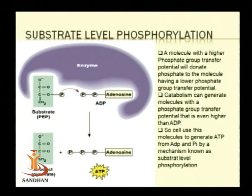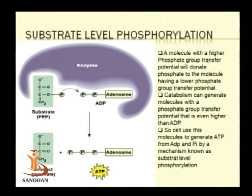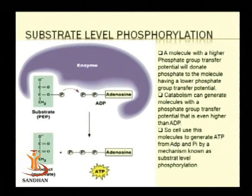Basically, generation of ATP is the phosphorylation of ADP. The inorganic phosphate which is added to ADP is added along with the formation of a phosphoanhydride bond, which requires an input of energy. Microorganisms are able to carry out phosphorylation of ADP by direct interaction of ADP with a high-energy intermediate such as phosphoenol pyruvate or 1,3-bisphosphoglyceric acid.